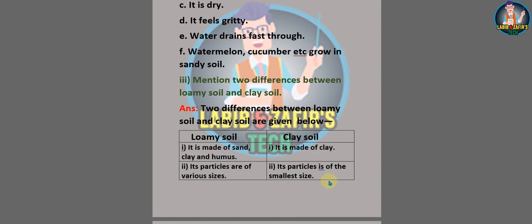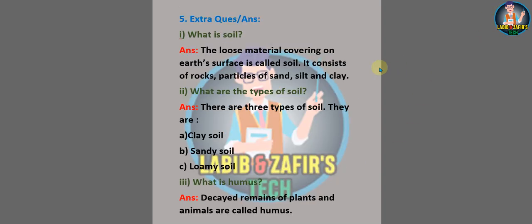Now we are in extra questions made by myself, along with the answers. Number one: what is soil? Answer: the loose material covering on earth's surface is called soil; it consists of rock particles of sand, silt, and clay. Number two: what are the types of soil? Answer: there are three types — clay soil, sandy soil, and loamy soil. Number three: what is humus? Answer: decayed remains of plants and animals are called humus.